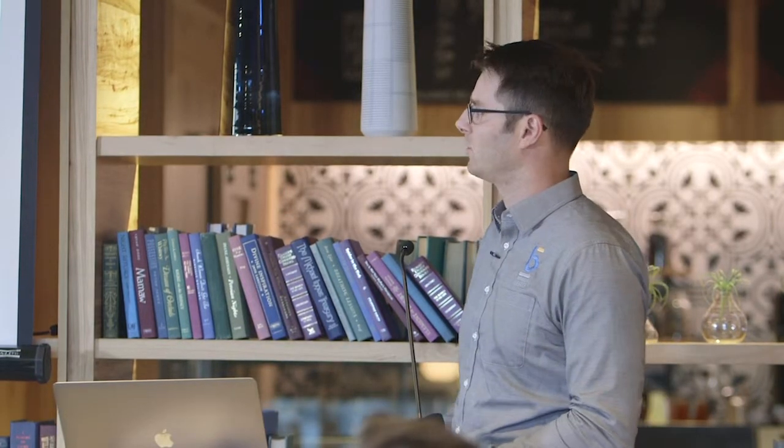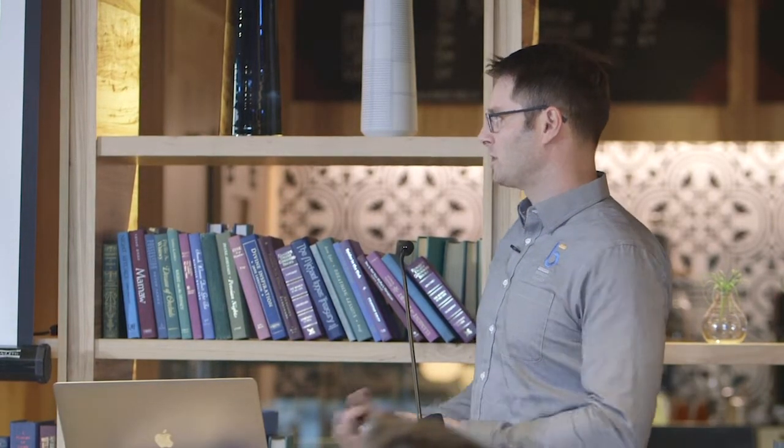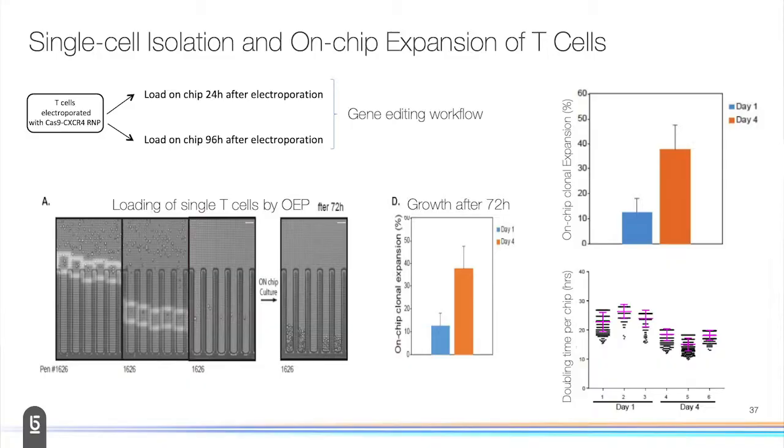Then we cloned them on the chip and let them expand into colonies, and then stained them for a phenotype. In this case, we're trying to knock out CXCR4, so we're actually looking for cells that do not express CXCR4 anymore. Then we do a split export. We take half the culture and take it out for lysis and sequencing, and then the other half goes into banking for expansion. We did a couple different ways looking at kind of how long after electroporation we should clone.